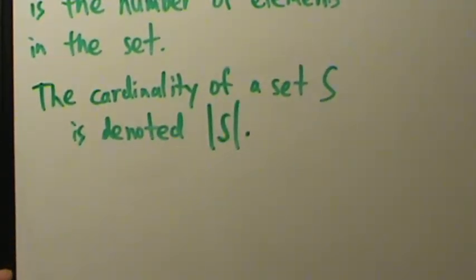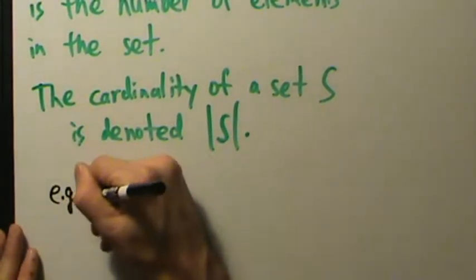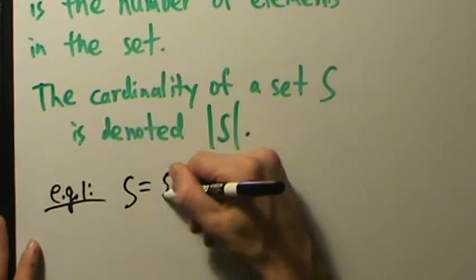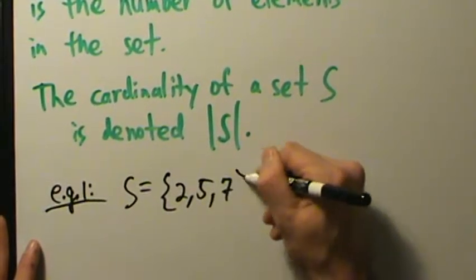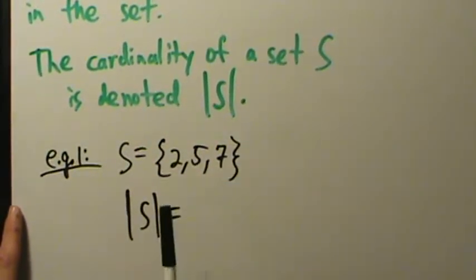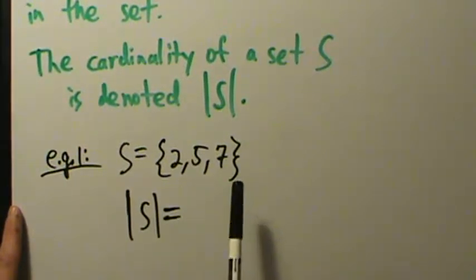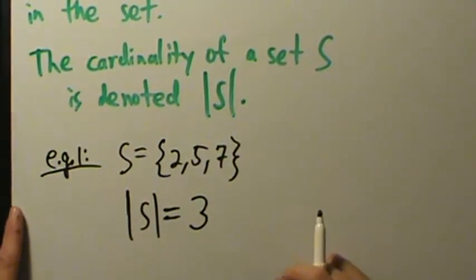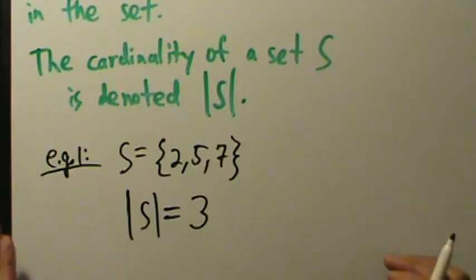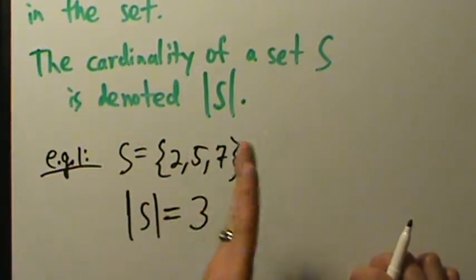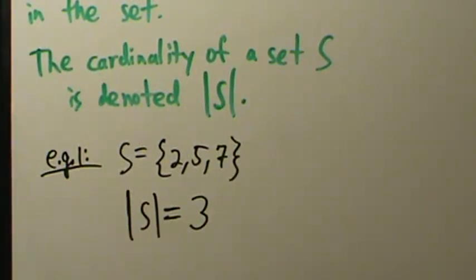Let's see a couple of brief examples, and then in the next video we'll talk a little more. Example one: let's say we have a set S which is {2, 5, 7}. What's the cardinality of S? Well, we just count how many elements are in the set. 2, 5, 7 — that's one element, two elements, three elements. So the cardinality of S is three, because we have three elements. It really is that simple — if you want the cardinality of a set, just count how many elements there are.